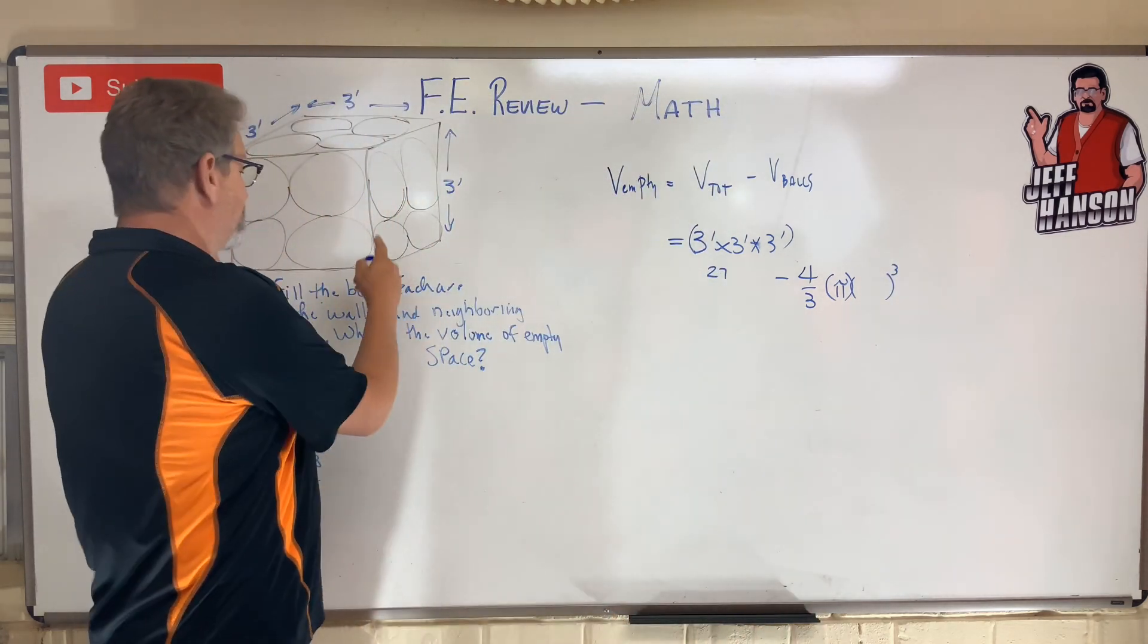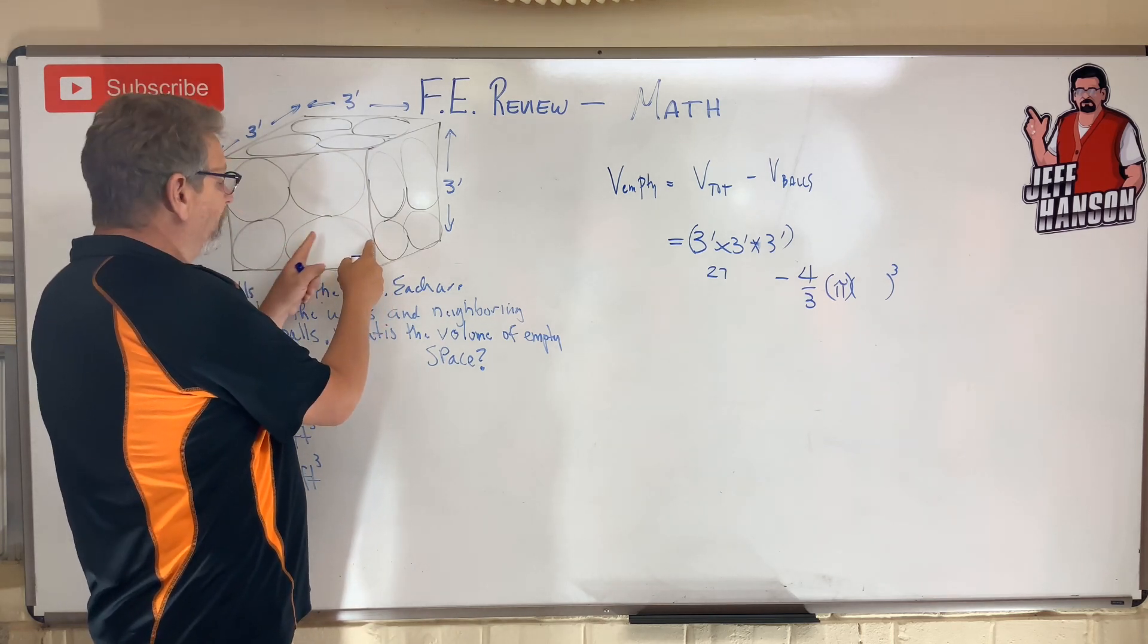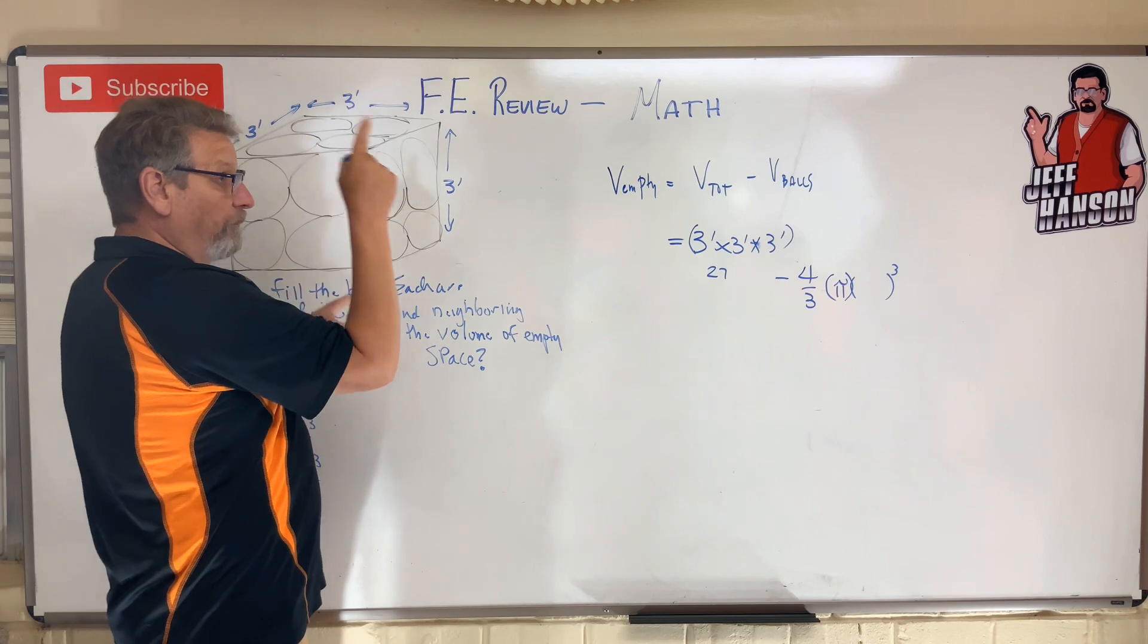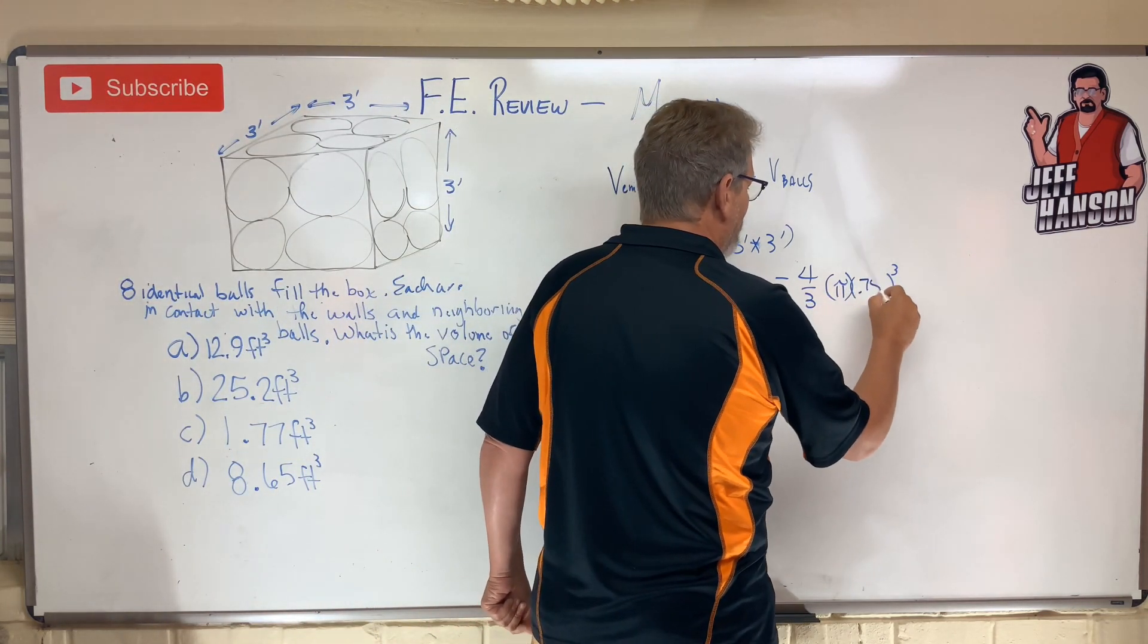And what's R? Well, if this is three feet, the diameter of one ball must be 1.5 foot, so the radius must be 0.75 feet, right? 0.75 feet.